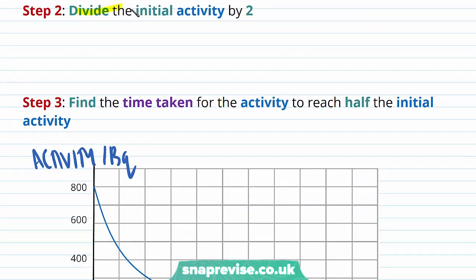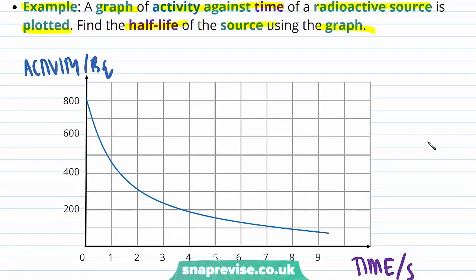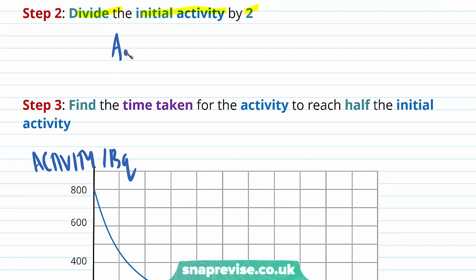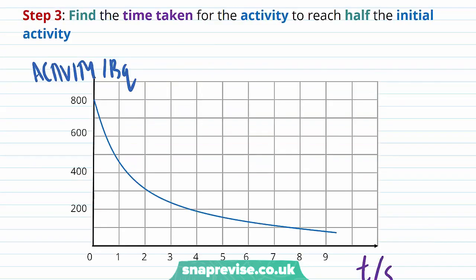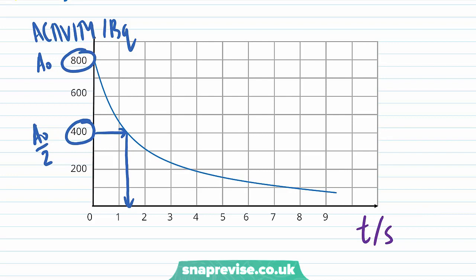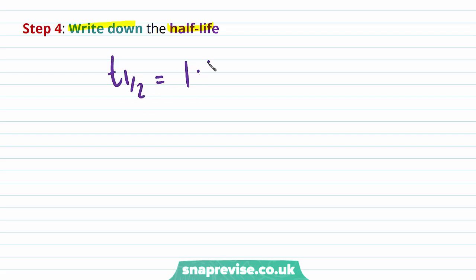Step 2: divide the initial activity by 2. On the graph we can see that the initial activity is 800, so the initial activity divided by 2 is equal to 400. Step 3: find the time taken for the activity to reach half the initial activity. The initial activity is 800 and half the initial activity is 400. The time taken for the initial activity to halve is 1.4 seconds. Step 4: write down the half-life. The half-life is equal to 1.4 seconds.